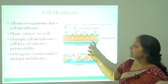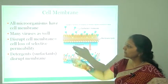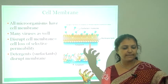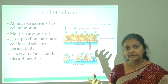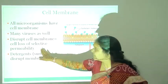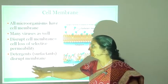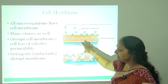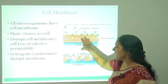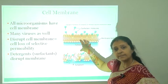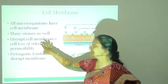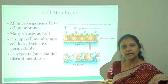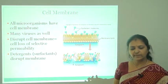First is damage to the cell membrane. All microorganisms possess a cell membrane, and disruption of the cell membrane results in loss of selective permeability. Some sterilizing agents disrupt the cell membrane of the microorganism, causing it to lose selective permeability, and ultimately the microorganism will die or be killed.